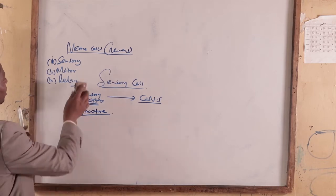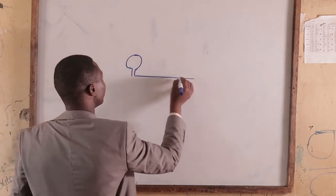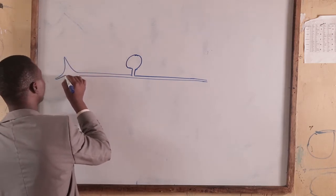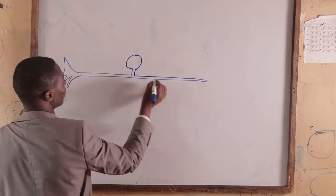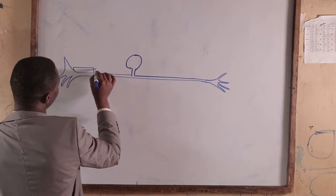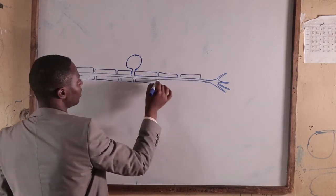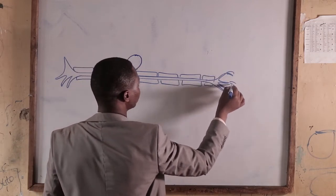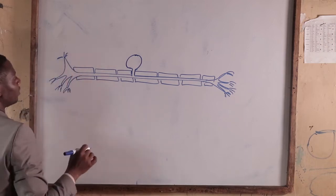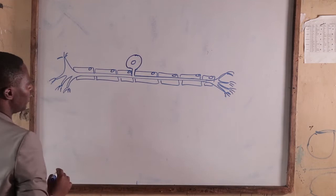This is how the structure looks like. We have the cell body, we have the axon, and then we have the dendrites. We also have the nucleus, and then we have other cells on top of it which are called Schwann cells.